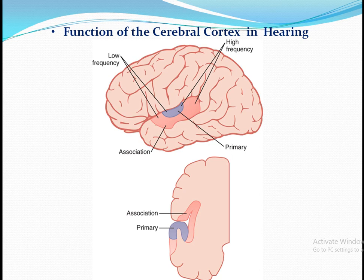Sound waves are ultimately perceived in the auditory cortex, located mainly in the temporal lobe. In the cortex we have primary and secondary auditory cortex, and low frequency and high frequency sound waves are separately perceived there — each frequency has a specific and separate place in the cortical area.